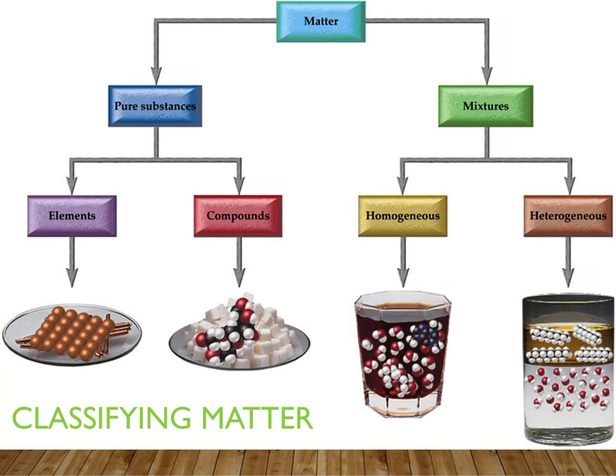Whereas copper — like maybe copper wire — that is another pure substance, but that is just a single element, just the copper in the wire. So if we have more than one substance, then we get into mixtures, which is on the other side.